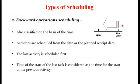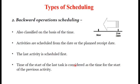The second type is Backward Operations Scheduling, also classified on the basis of Time. Activities are scheduled from the Due Date or Planned Received Date. The Last Activity is scheduled first, then the second-last, and so on towards the present. The Start Time of the Last Task is considered as the time for the start of the previous activity, working backwards.